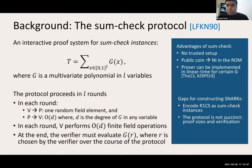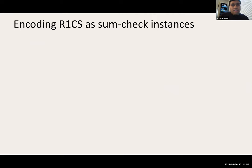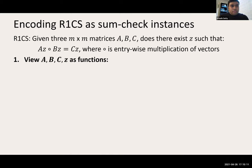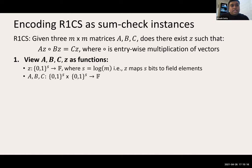Let's recall what R1CS is: given three public matrices of size M by M, does there exist some secret vector Z such that a specific relationship holds? To encode R1CS instances as sum check instances, we view these matrices and the witness as functions. For example, Z is a vector of size M, viewed as a function from S bits to a finite field element. Similarly, A, B, C can be viewed as mapping two S bits to a finite field element — the first S bits select a row, the second a column, and it outputs the value present in the matrix.